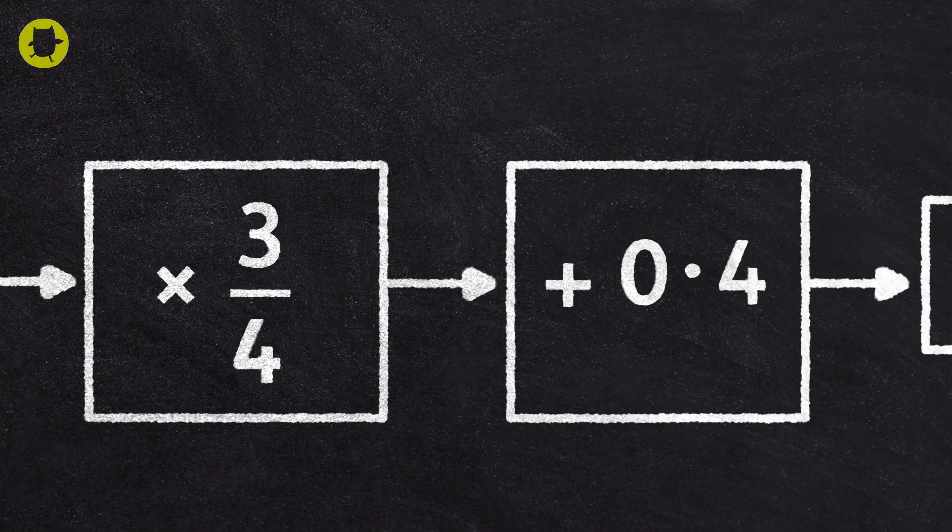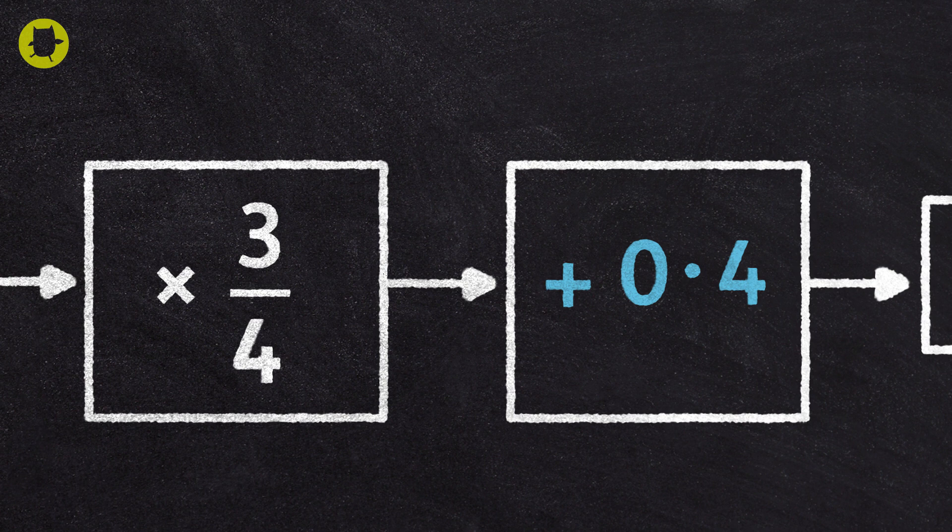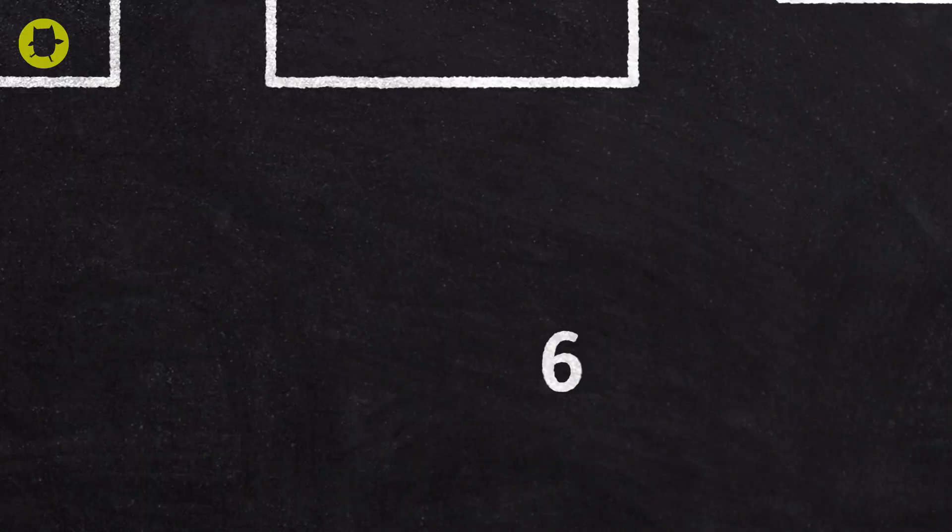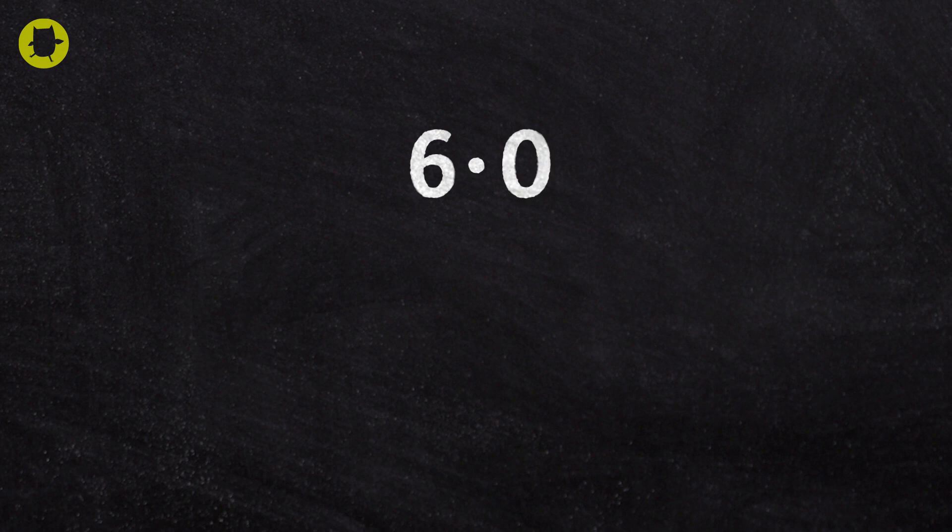The second step of the calculation is to add zero point four. Six is the same as six point zero. So adding six point zero and zero point four keeps the columns tidy with the decimal point in the same place.